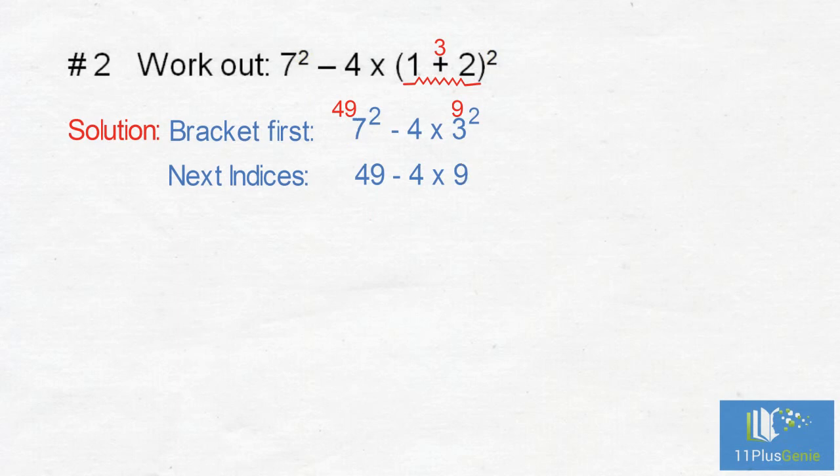Is there multiplication or division? Yes. 4 times 9 equals 36. We have 49 minus 36 equals 13.